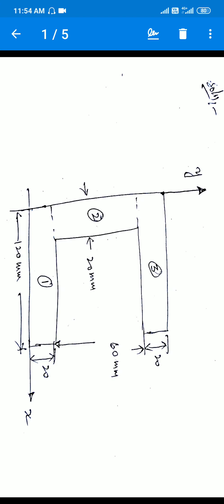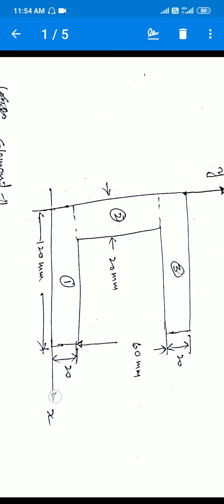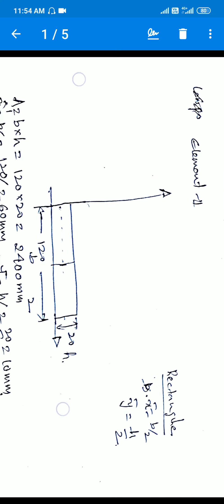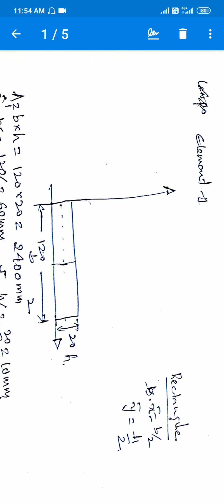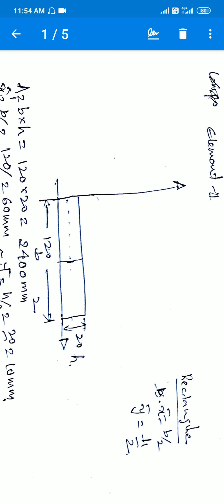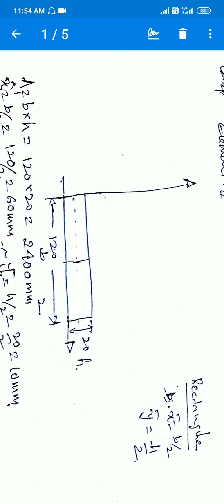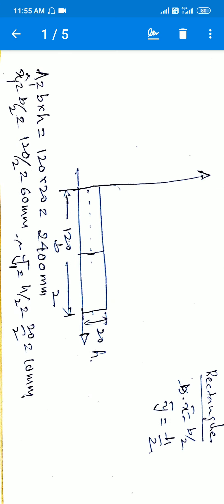One by one, we draw each element and calculate its area, and x and y coordinates of its centroid. For element one, drawing with reference to the x and y lines, the position should match the given diagram. The dimensions are 120×20. For a rectangle, x̄ and ȳ are found using b/2 and h/2. First, we find the area: A = b × h.